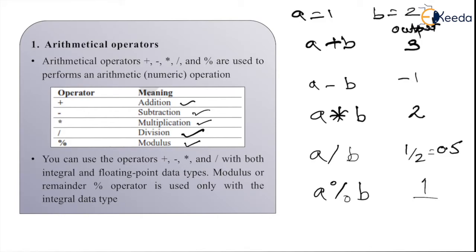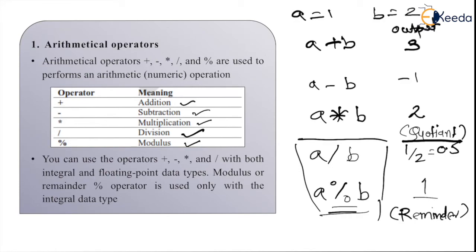Why 1? Because modulus returns remainder. That means, this will give you the value which is remainder and division will give you the value that is quotient. Both the operands get performed the same operations, that means division operation. But division will return you the quotient value, modulus will return you the remainder value.